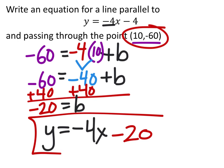And there we have the equation of a line that's parallel because the slope is the same, and it goes through this point because we used slope-intercept form to find the y-intercept. If you used point-slope form, it still wouldn't matter — you'd still get the same answer.